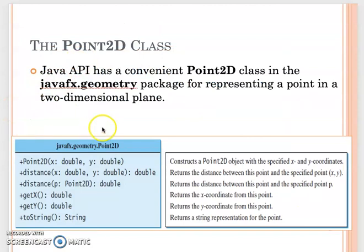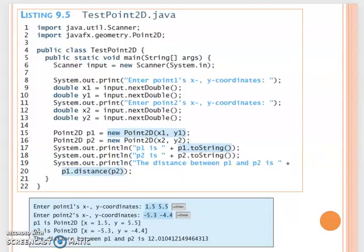Next is Point2D, which is a geometry class. You can specify your x and y coordinates, and it can calculate distances between points or let you set x and y. That's Point2D — two-dimensional x, y coordinates. I want you to type these examples and try them in Eclipse to make sure you know how to use them.